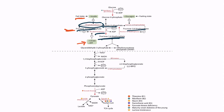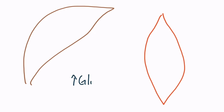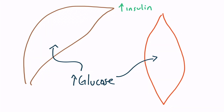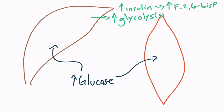Let's draw this out. This will represent the liver, and this will represent skeletal muscle tissue. When blood glucose levels are high, both the skeletal muscle and the liver are utilizing the glucose. In this scenario, insulin will be high, which will increase the concentration of fructose-2,6-bisphosphate. When fructose-2,6-bisphosphate is high, this will result in increased hepatic glycolysis. The liver senses that the tissues have enough glucose, so it will utilize glucose for its own needs and then store the remaining glucose into glycogen.